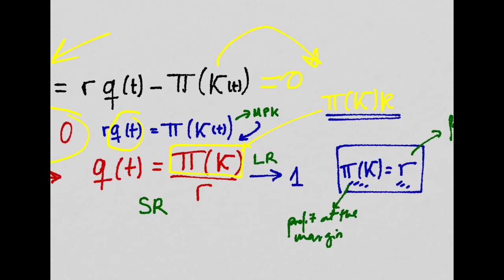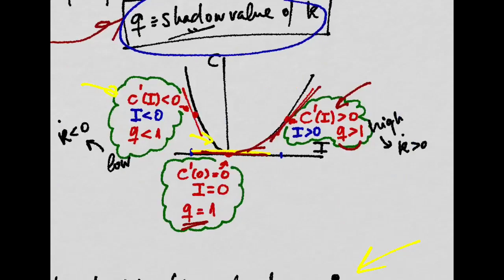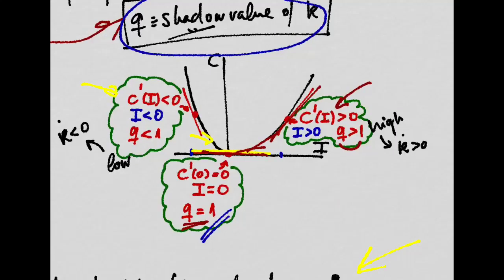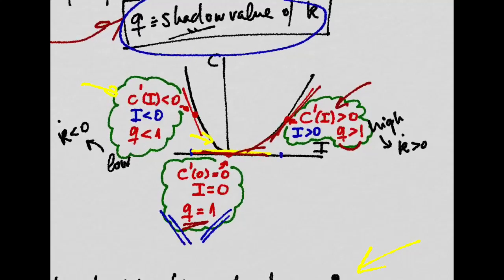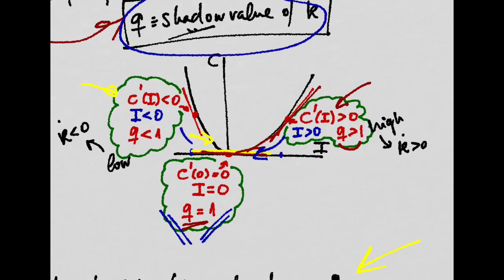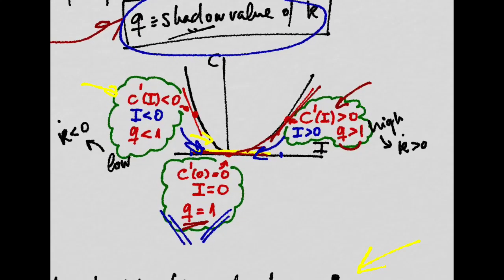So we have seen in the short run Q can actually be different from one. But if this happens, then Q can actually be different from one. But over the long run, the firms are going to invest less or invest more until the point where Q is actually equal to one.